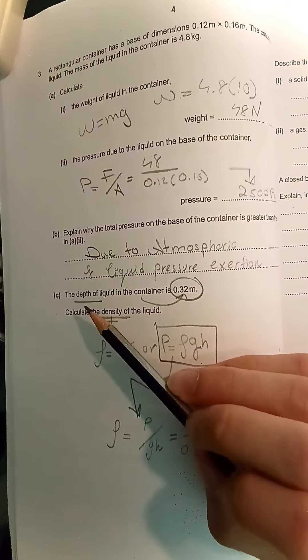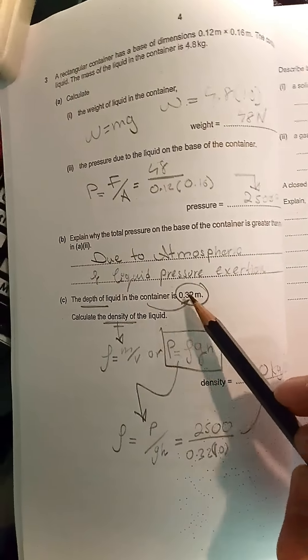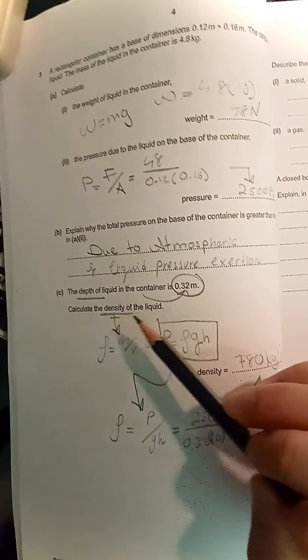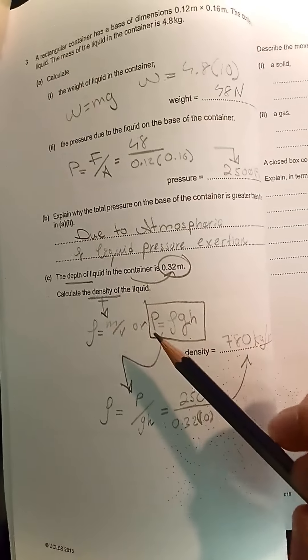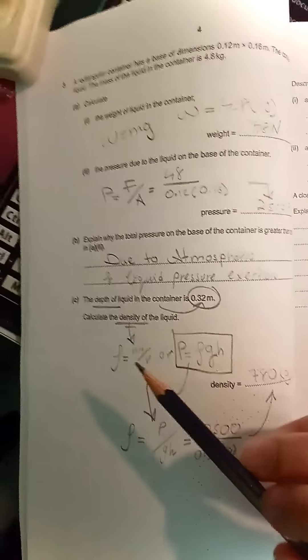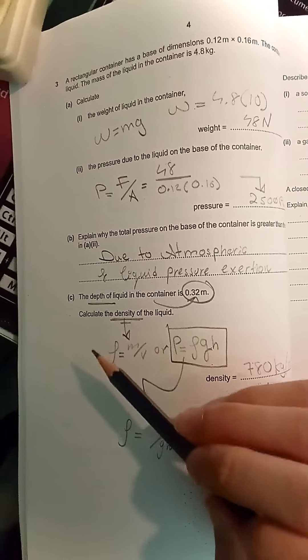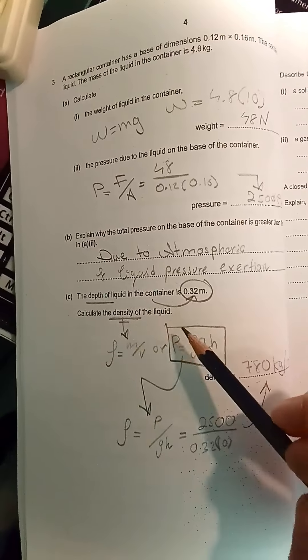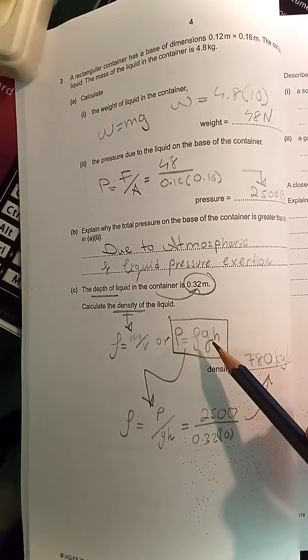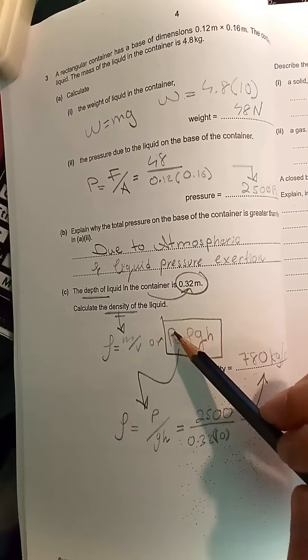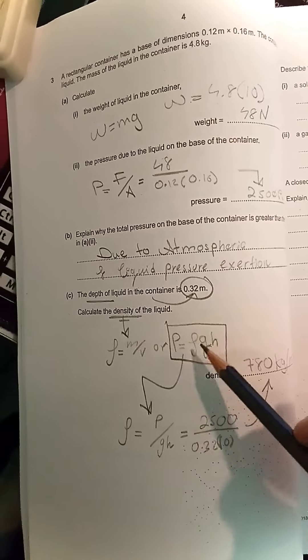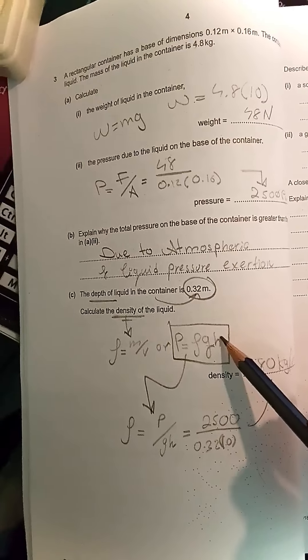Part C: The depth of the liquid in the container is 0.3 meters. Calculate the density of the liquid. Density has two formulas. The first is the classic formula: mass divided by volume. The second is the pressure-based formula: pressure equals ρgh, where ρ is density, g is gravitational field, and h is height or depth.